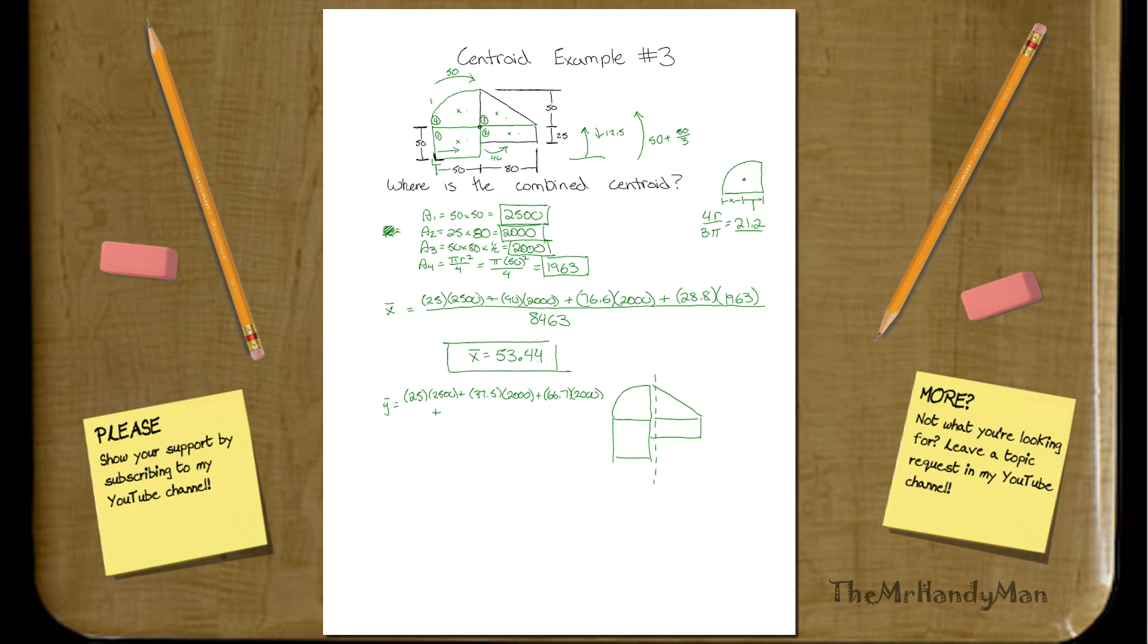Plus, the final area, which, mind you, we already know that distance, it's going to be 21.2, because we already found it out, over here on the right, the distance to that centroid of the quarter is 21.2, so, 21.2, plus the box, the initial box of area 1, you'll have 50 plus 21.2, that's 71.2. 71.2, 1963. All over, 8, 4, 6, 3.